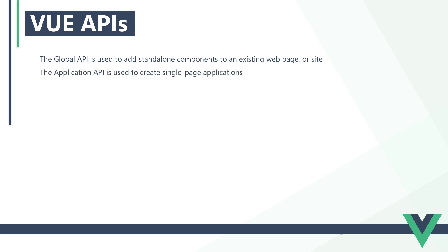The application API is used to create single-page applications, like Netflix. To use it, we create a project with the Vue CLI, or Vite, and compile it to a working application once development is finished.